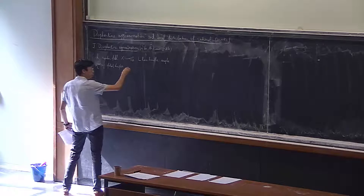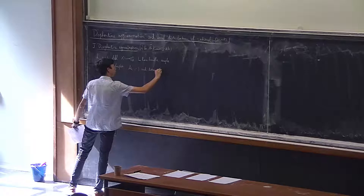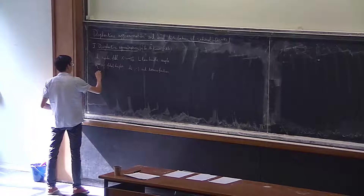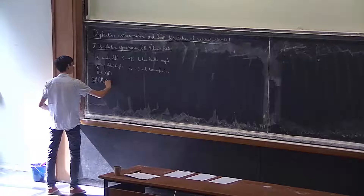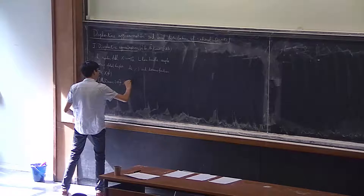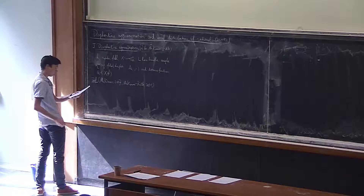I fix an Archimedean distance function on X, and the point Q, a rational point to be approximated. The following definition is due to McKinnon, first in 2007, and in their later work McKinnon-Roth. They define the notion which we will call the approximation constant.